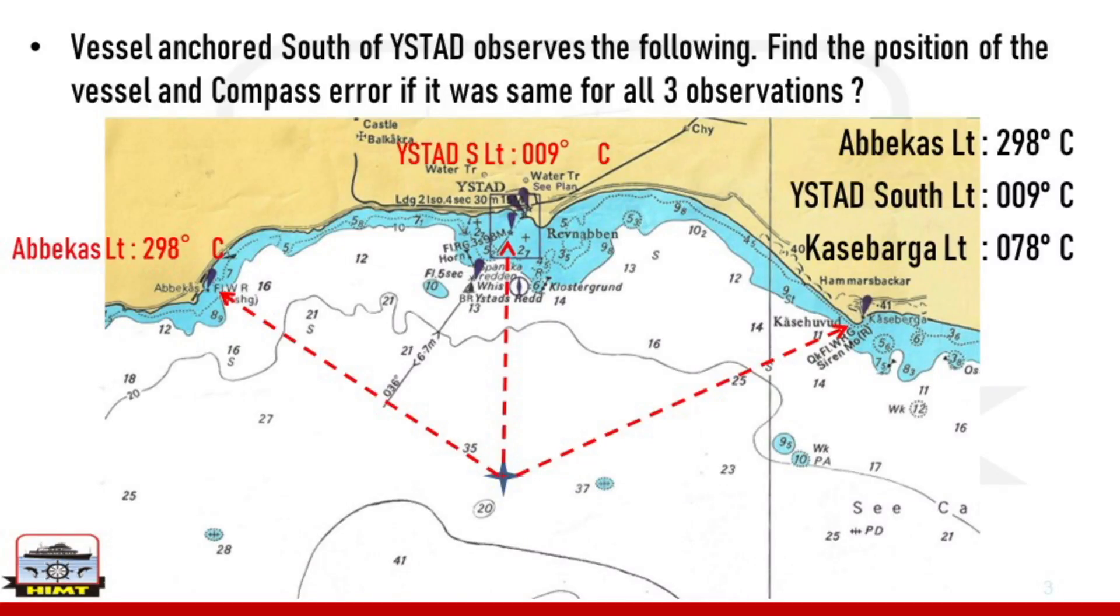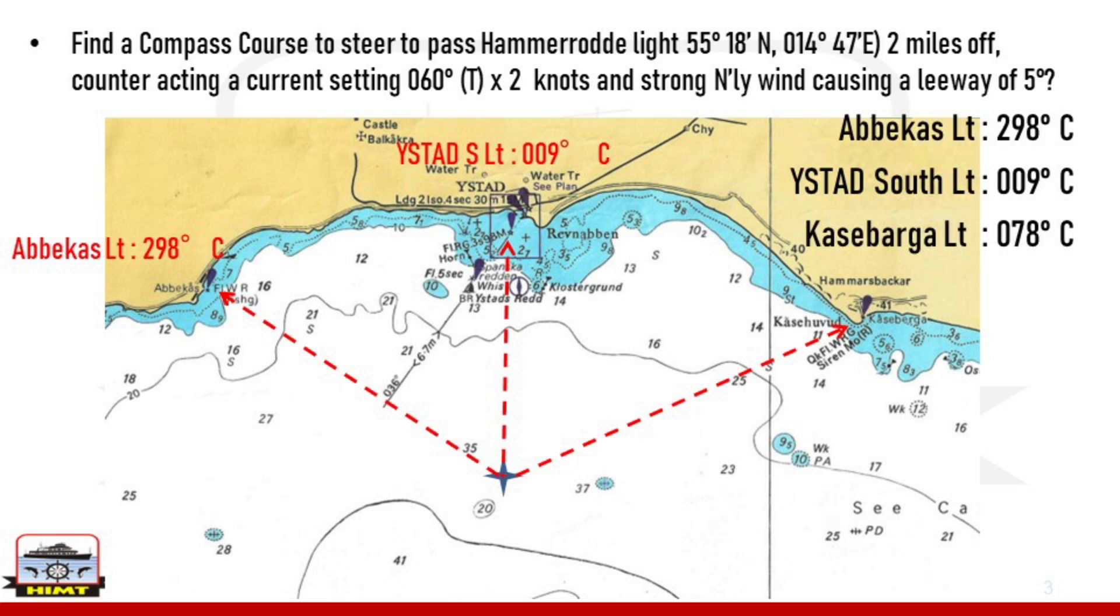Now we come to the next part of the question. Find the position of the vessel, which is already found out. Compass error already obtained. From this position, find a compass course to steer to pass Hammerrod light, position is given 2 miles off, counteracting a current setting 060 degrees true and 2 knots. So first, let us complete off the first one. The first requirement is to pass off Hammerrod light. Hammerrod light is located here at this point.